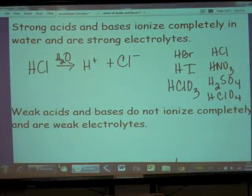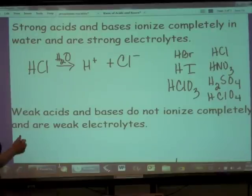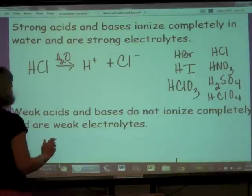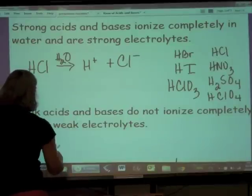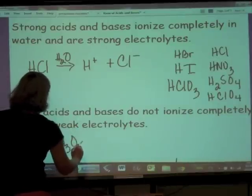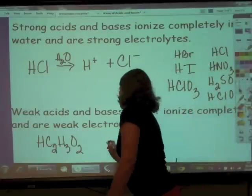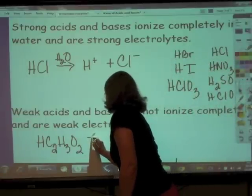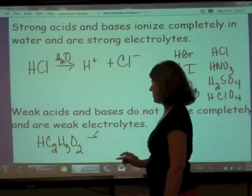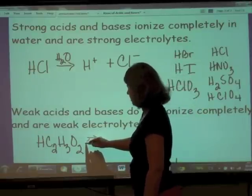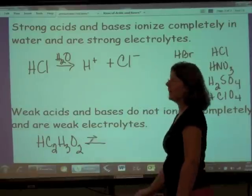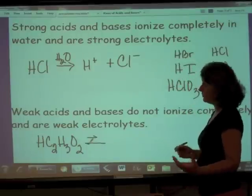Weak acids and bases do not ionize completely in solution. They're not completely dissociated and they're weak electrolytes. They're weak electrolytes because they're not completely dissociated. So an example of that is going to be acetic acid HC2H3O2. So what we end up having here with this dissociation is we've got a little bit dissociating, but mostly it is all together as HC2H3O2.